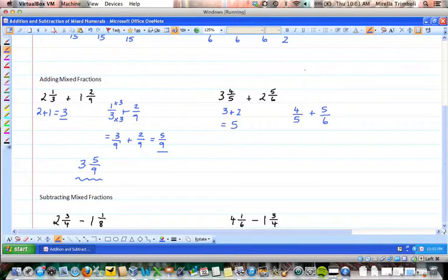Five and six both go into thirty, so I can multiply the first fraction top and bottom by six and the second fraction top and bottom by five. So I have 24 over 30 plus 25 over 30. This gives me 49 over 30, and we really need to change that to a mixed number, so 30 goes into 49 once with a remainder of 19 over 30.